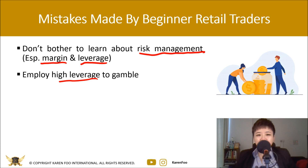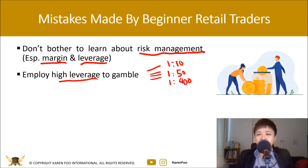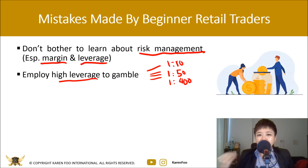The second mistake is using high leverage to gamble. Some traders shop around for the highest leverage broker — going from 1:10 to 1:50 to 1:400. The reason they do this is they don't understand the massive conflict of interest in this industry. Brokers offer high leverage not to help you make money, but to entice you to open an account and trade large lot sizes so the broker earns more in spread.